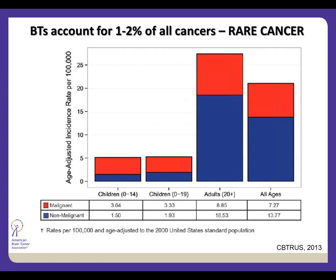Brain tumors come in two general groupings: malignant and non-malignant. Malignant brain tumors have been collected in the United States since the early 1970s at the state level. Non-malignant tumors started being collected around the mid-2000s. In general, children get a much higher proportion of malignant brain tumors than non-malignant, while adults get a much higher proportion of non-malignant compared to malignant.